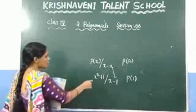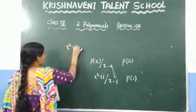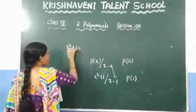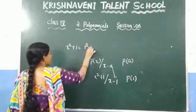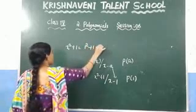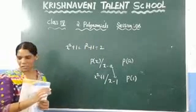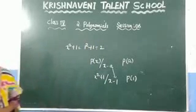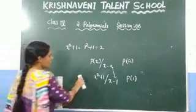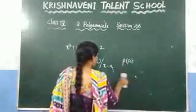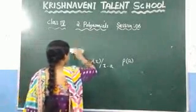According to the remainder theorem, substitute x equals 1 into the dividend. The dividend is x squared plus 1. If you substitute x equals 1, you get 1 squared plus 1 which is 2. This is how you can find the remainder using the remainder theorem.